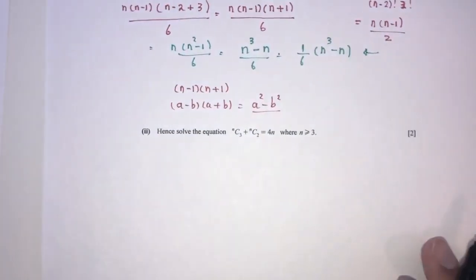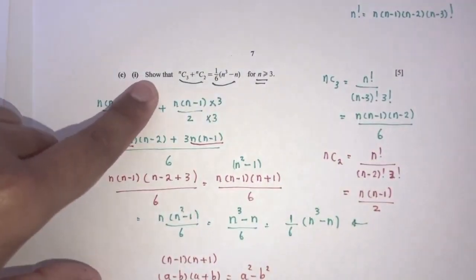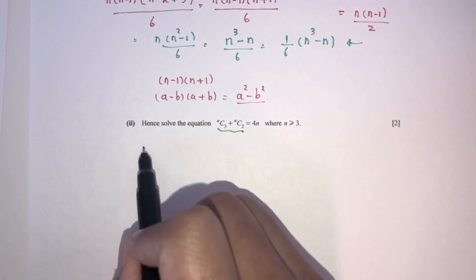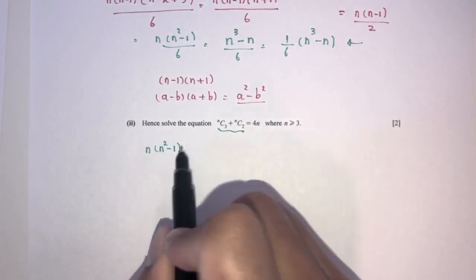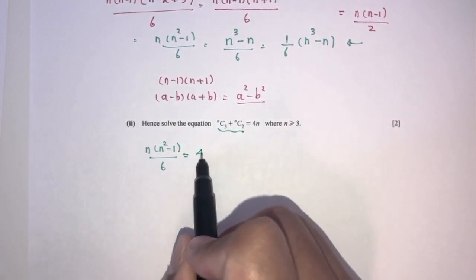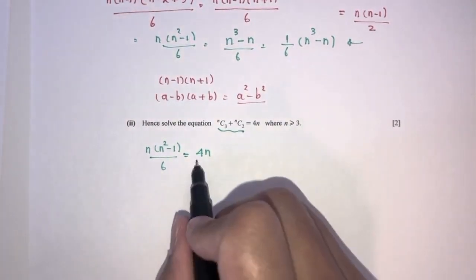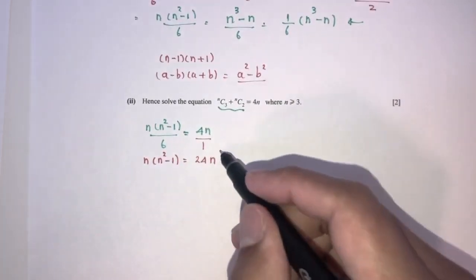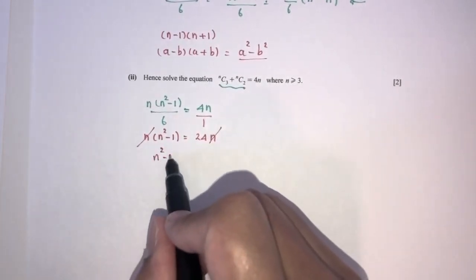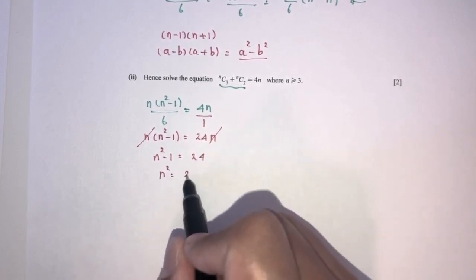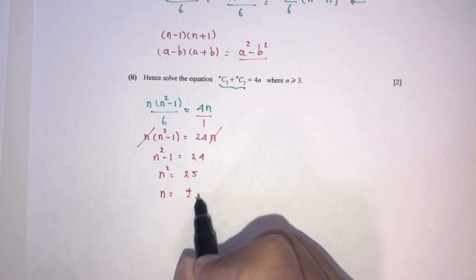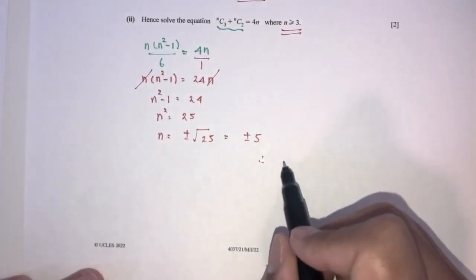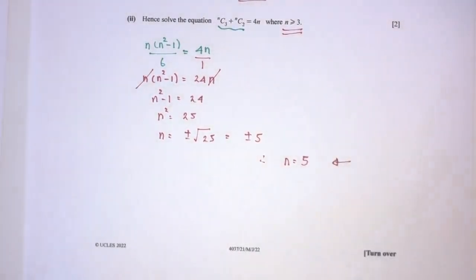For part ii — 'hence' — we use part a to solve the equation n-choose-3 plus n-choose-2 equals 4n. Substituting: n(n squared minus 1) over 6 equals 4n. Cross-multiplying and cancelling n from both sides: n squared minus 1 equals 24, so n squared equals 25, giving n equals plus or minus 5. Since n must be greater than or equal to 3, n equals 5.